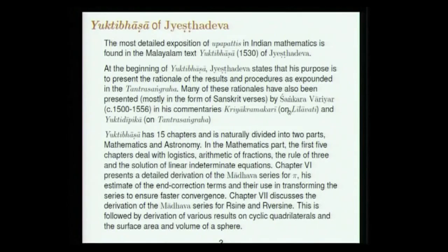The most detailed exposition of proofs or Upapathis in Indian mathematics is found in the Malayalam text Yuktibhasa of Jyeshtadeva. Yuktibhasa states that its purpose is to give the rationale of the results and procedures presented in Nilakantha's Tantrasangraha. Many of these rationales have also been presented mostly in Sanskrit verses by Shankara Variyar, a pupil of Nilakantha, in two commentaries: Kriya Kramakari on Lilavati and Yuktidipika on Tantrasangraha. Yuktibhasa has 15 chapters, and it is chapter 6 which deals with the Madhava series for R sine and R versine.